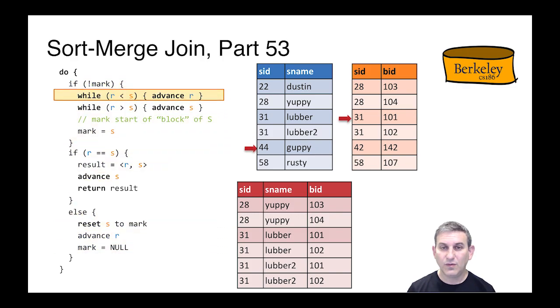And here, we advance S until it's bigger than R, set the mark, but they're not equal. So we go through this logic. We advance R, set the mark to null. We're at the top. We set the mark. They are equal in this case. We create a result. We return the result to next.